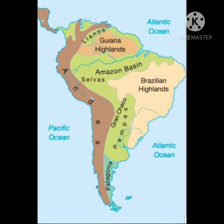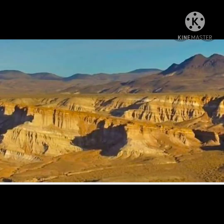Some characteristics of both highlands: both the Guiana and Brazilian highlands are older than the Andes — they are old fold mountains. They are formed of hard igneous rocks, with some deposits of sandstone and also some deposits of recent lava flows visible in these highlands.